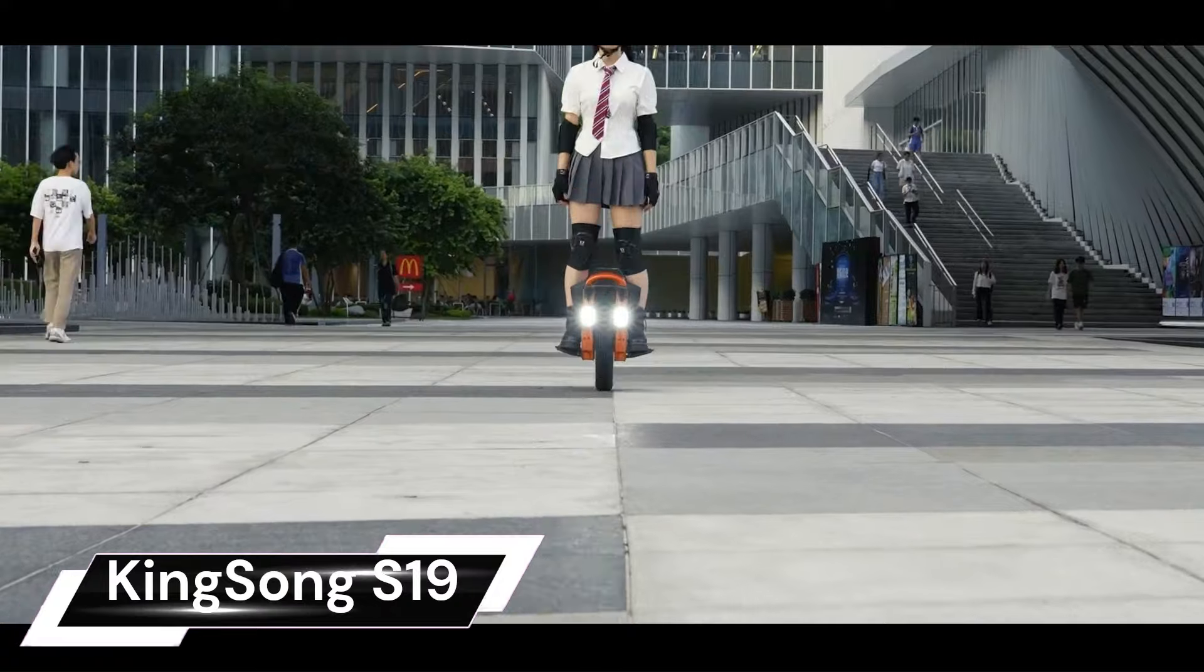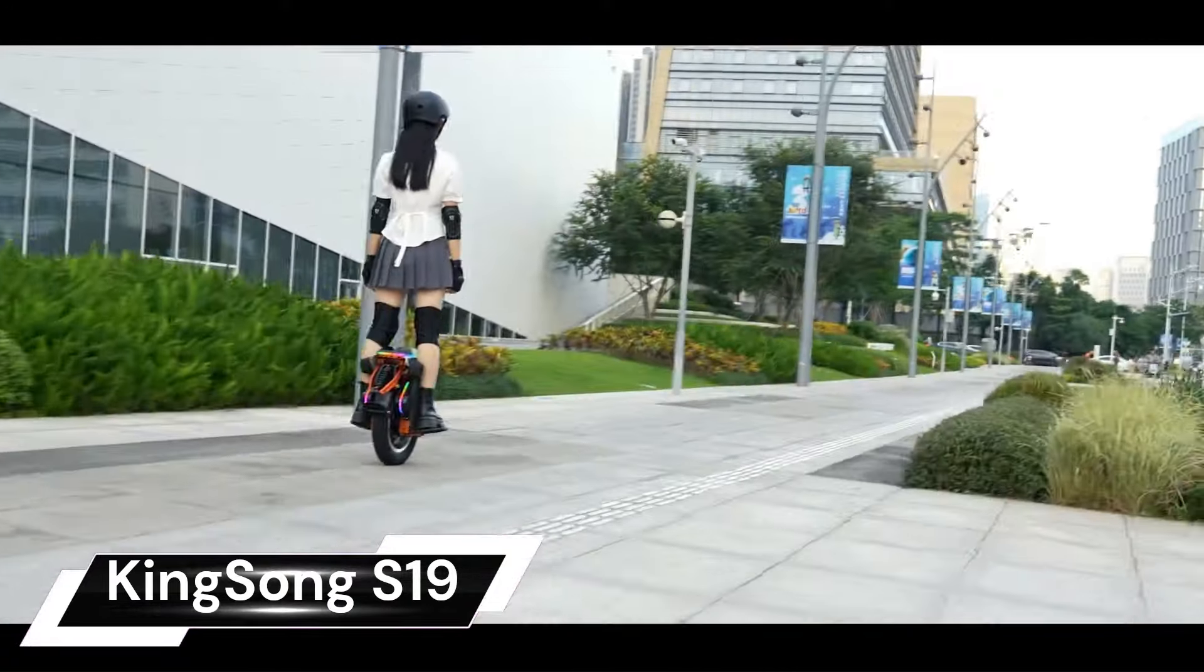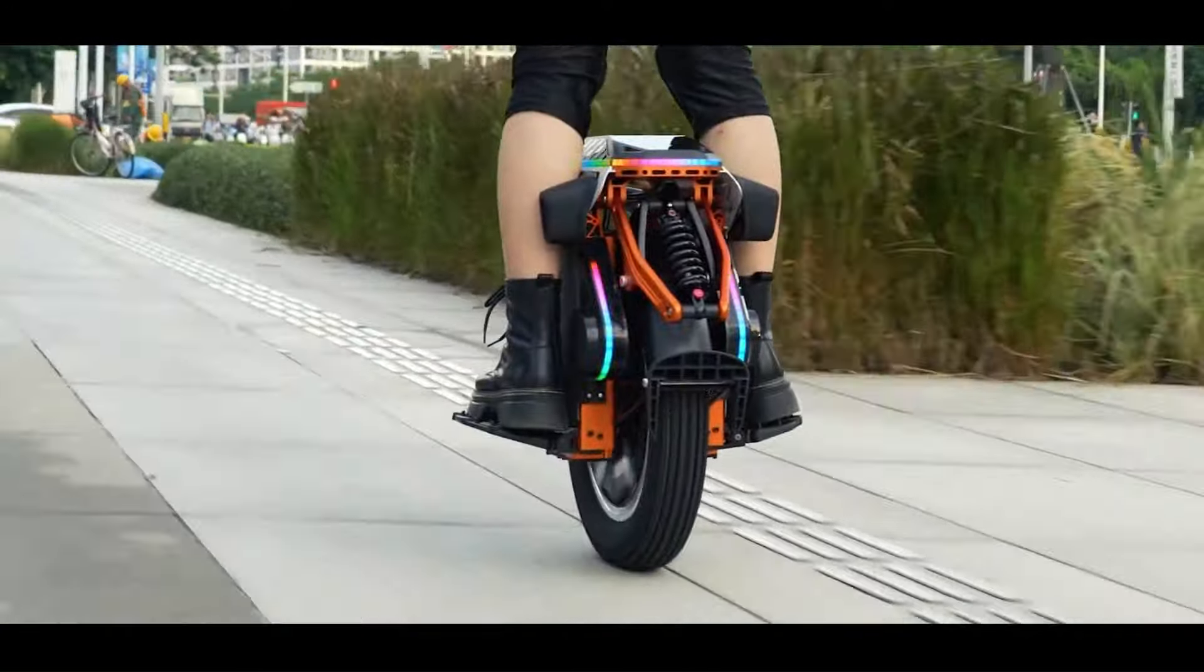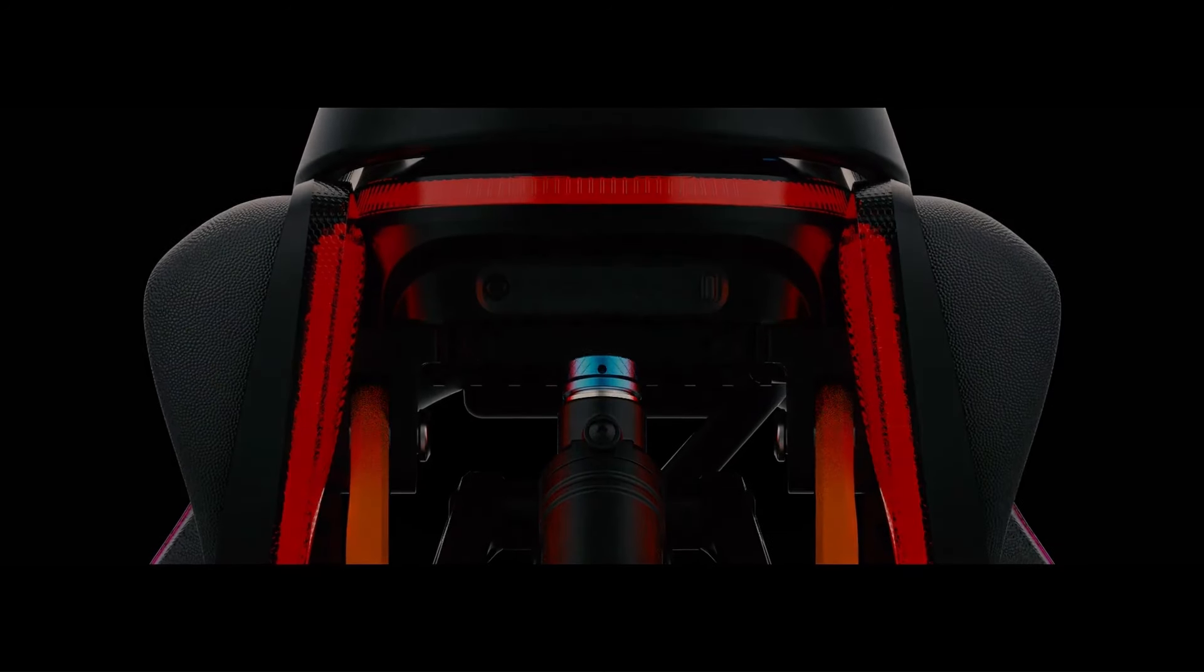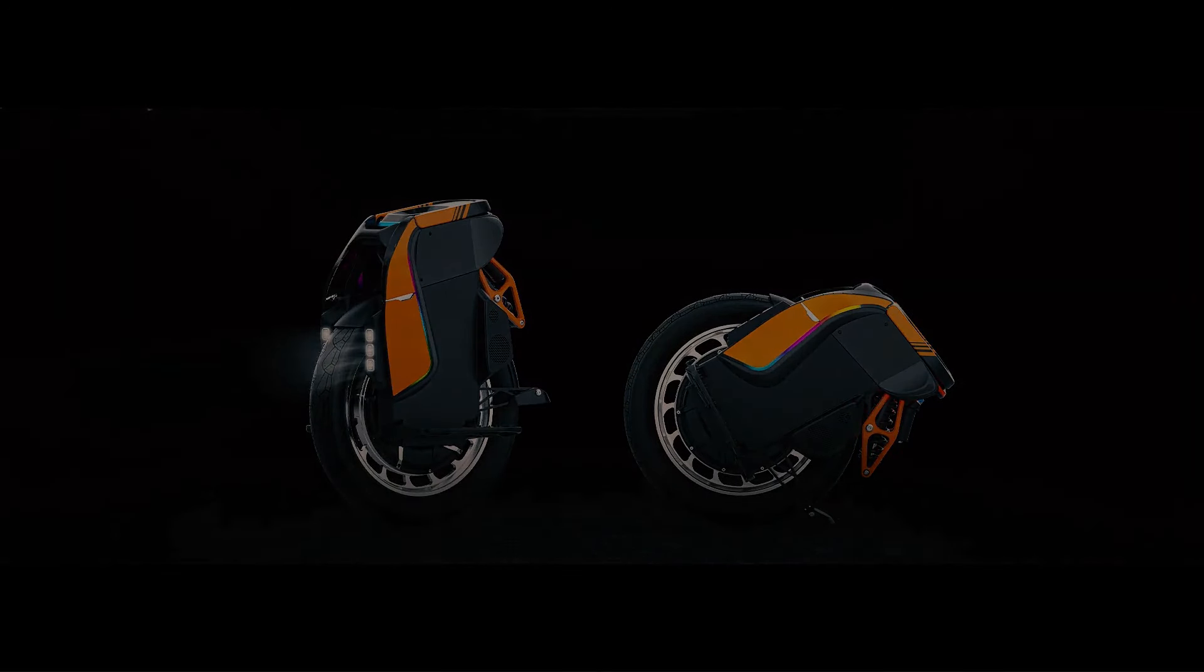The Kingsong S19 is a high-performance electric unicycle that's popular for both off-road and urban adventurers. It's not the most affordable electric unicycle on the market, but it's priced competitively for its features and performance.